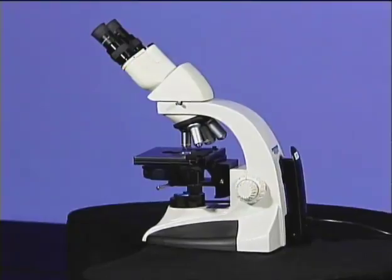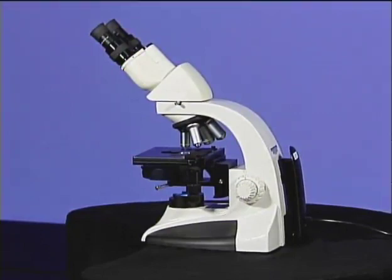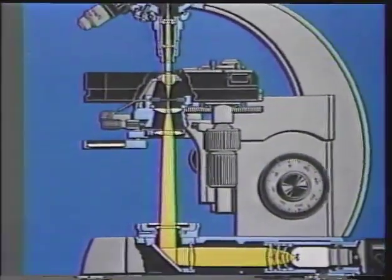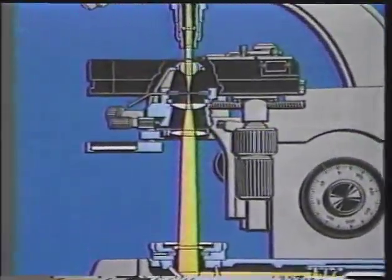Let's follow the path that light takes through these lens systems. Light from a light source is concentrated by the condenser, passes through the specimen, and then through the objective, forming a real image of the object.